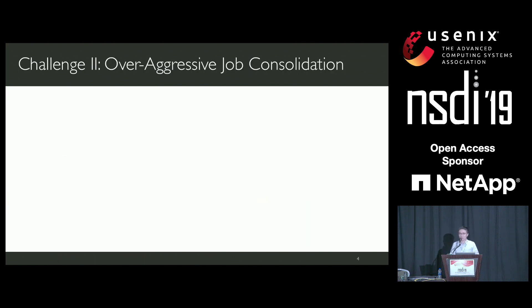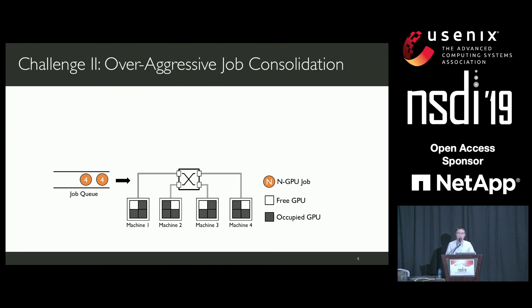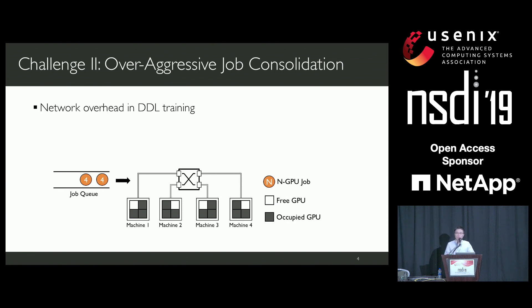The second challenge is over-aggressive job consolidation during placement. In distributed training, there are multiple job components that need to exchange intermediate results during training. If those components are placed on different machines, data has to be transferred over the network, which slows down the training speed. So to protect training performance, people consolidate job components onto either a single machine or a minimum number of machines.